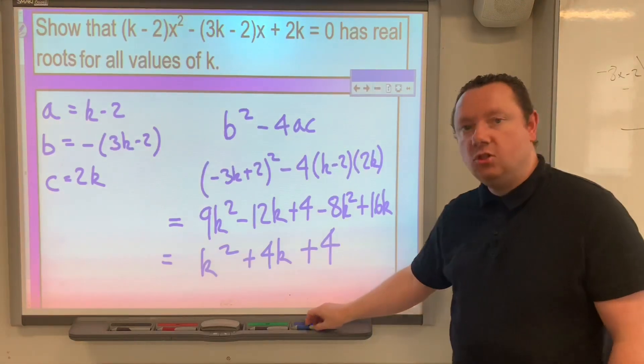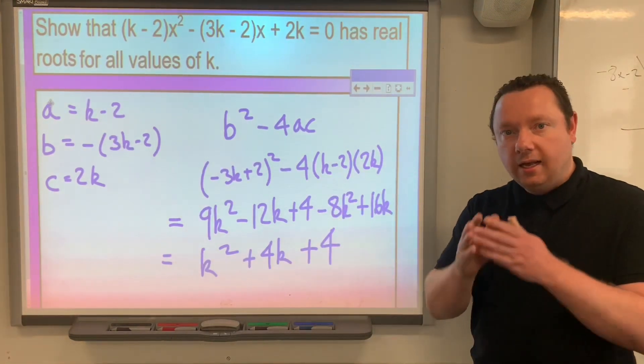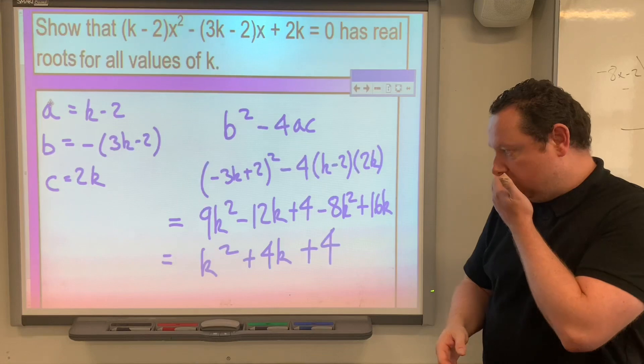Now if I try to complete the square on that and I've got no number on the end, that is definitely a perfect square. So that's what I'm going to try and do.